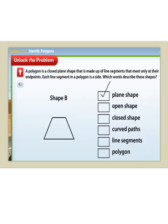How about open shape? Is our shape open or is it closed? Our shape is closed. And do we have any curved paths? Nope, we do not have any curved paths. Our lines are straight. So, since we don't have curved paths, we have line segments. Our shape is a polygon because it is closed, it has line segments, and it is a plane shape.